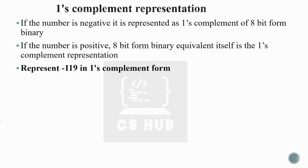Now let's take an example: represent minus 119 in one's complement form. The number is negative, so we first find the absolute value, which is 119. We then find the 8-bit binary equivalent of 119 and apply the one's complement by inverting all the bits.